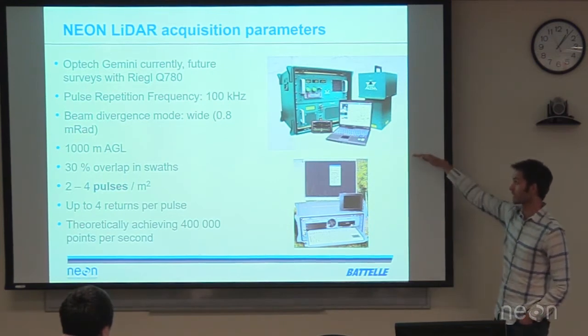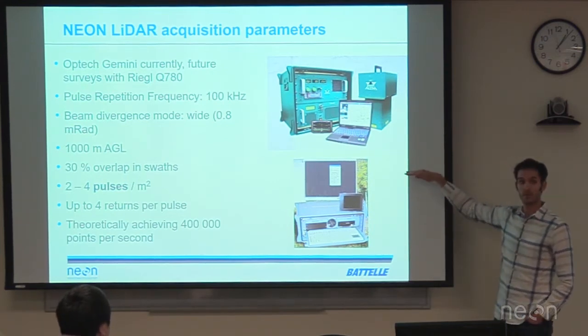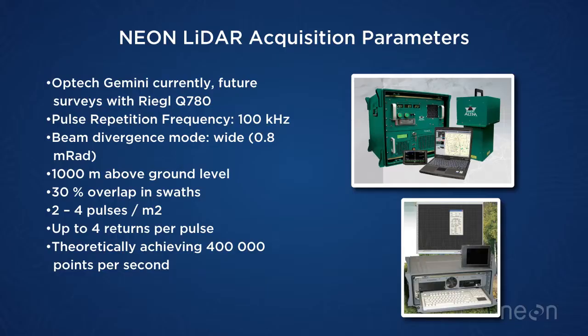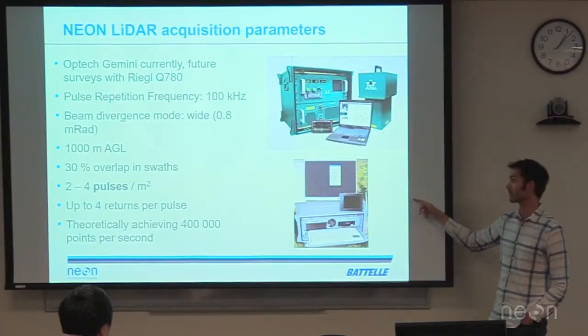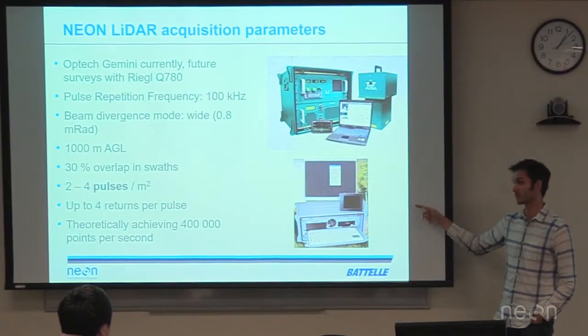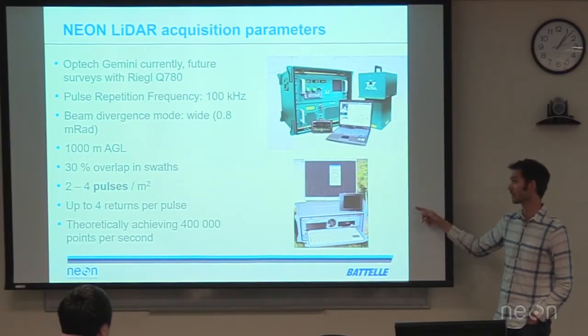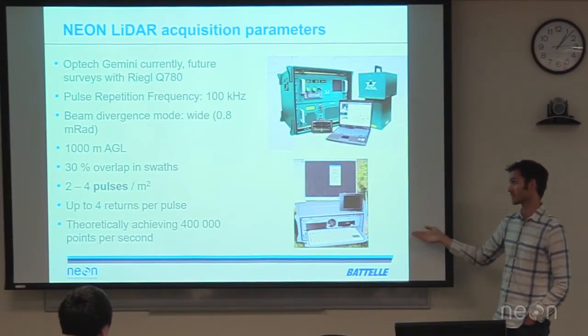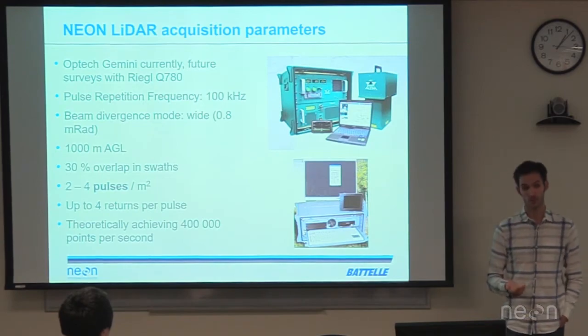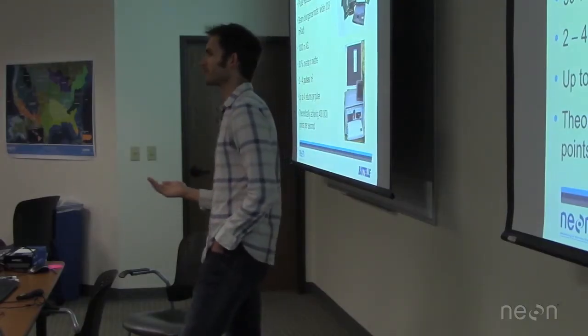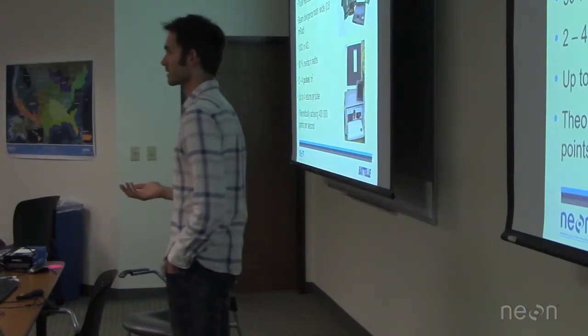We fly at 1,000 meters with 30% overlap in our flight lines, giving us two to four pulses per square meter — four in overlapped areas and two in non-overlapped areas. The system is capable of recording up to four returns per pulse on the discrete LiDAR, theoretically achieving 400,000 points per second, though you'll never get four returns on every pulse.